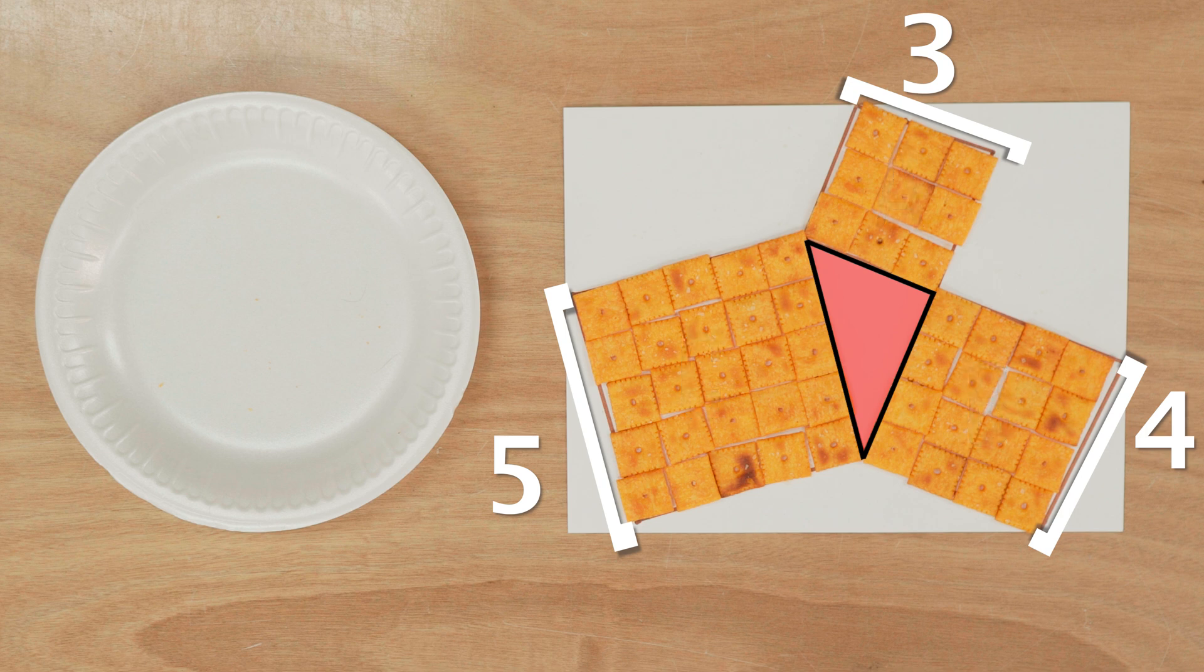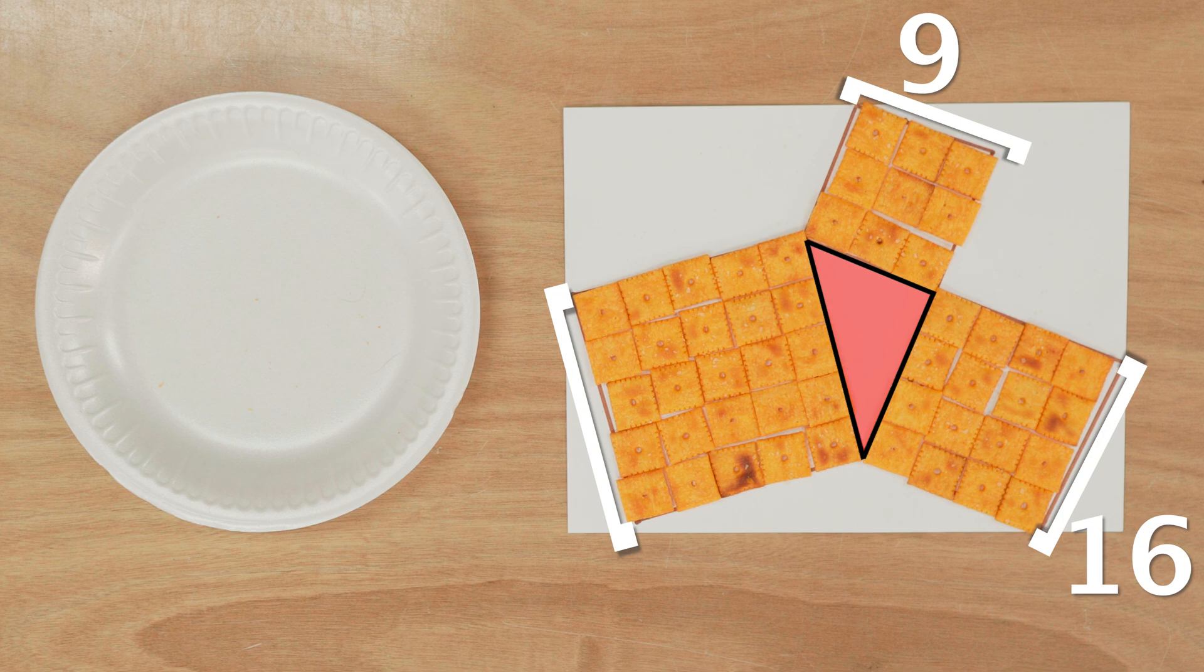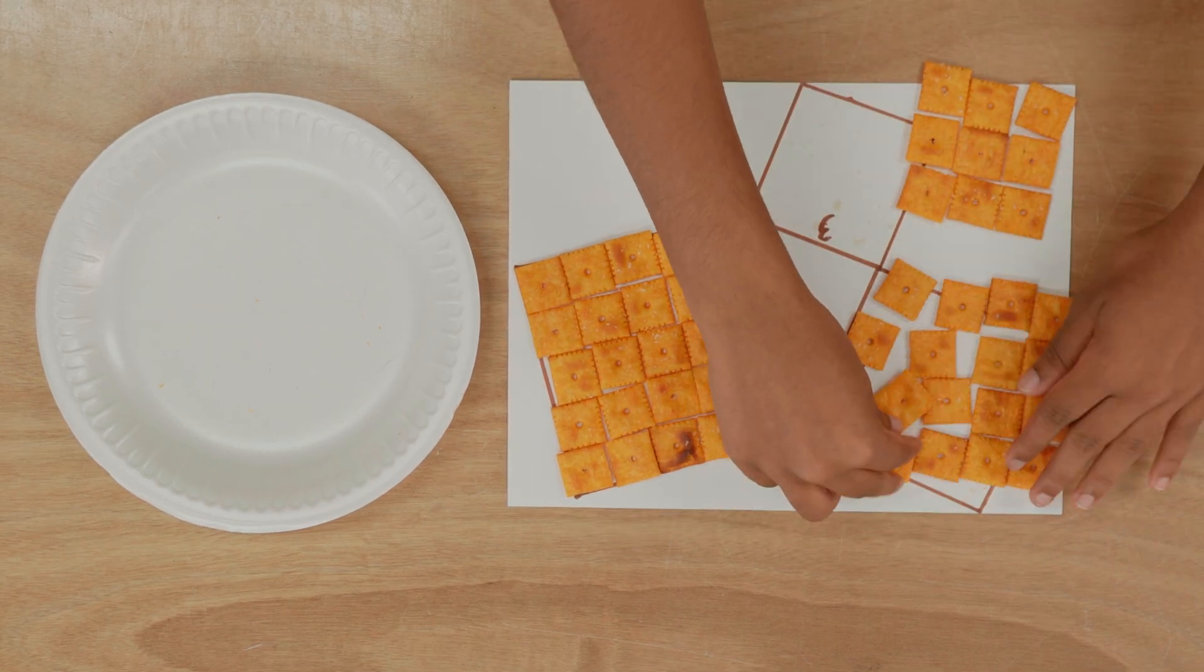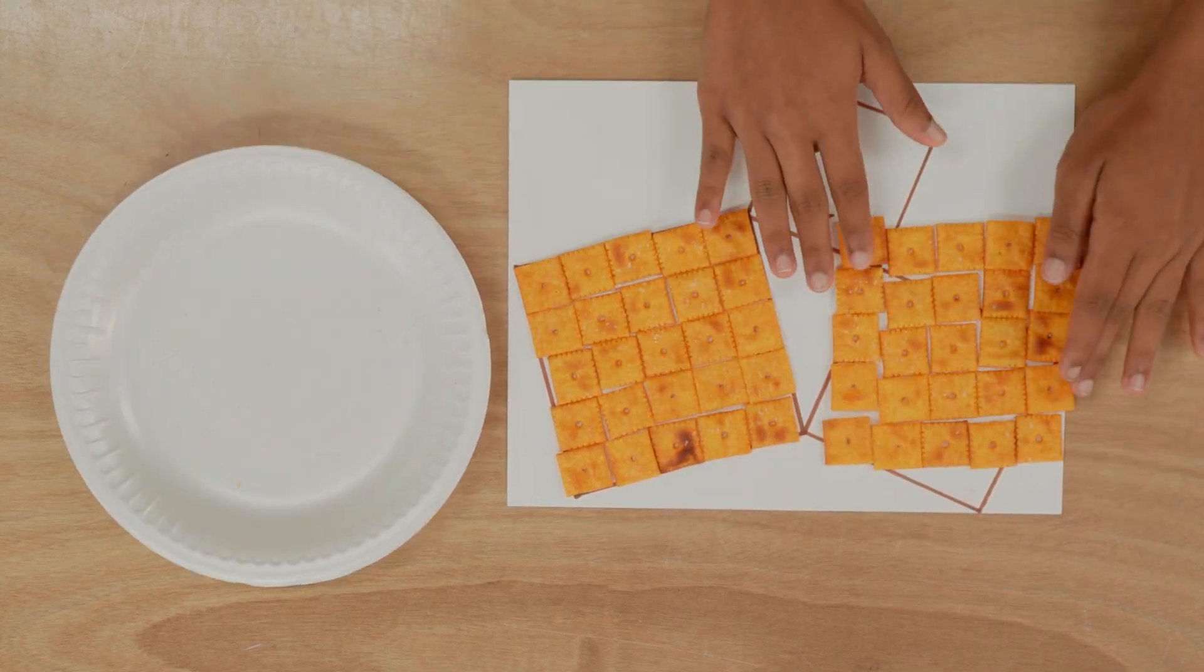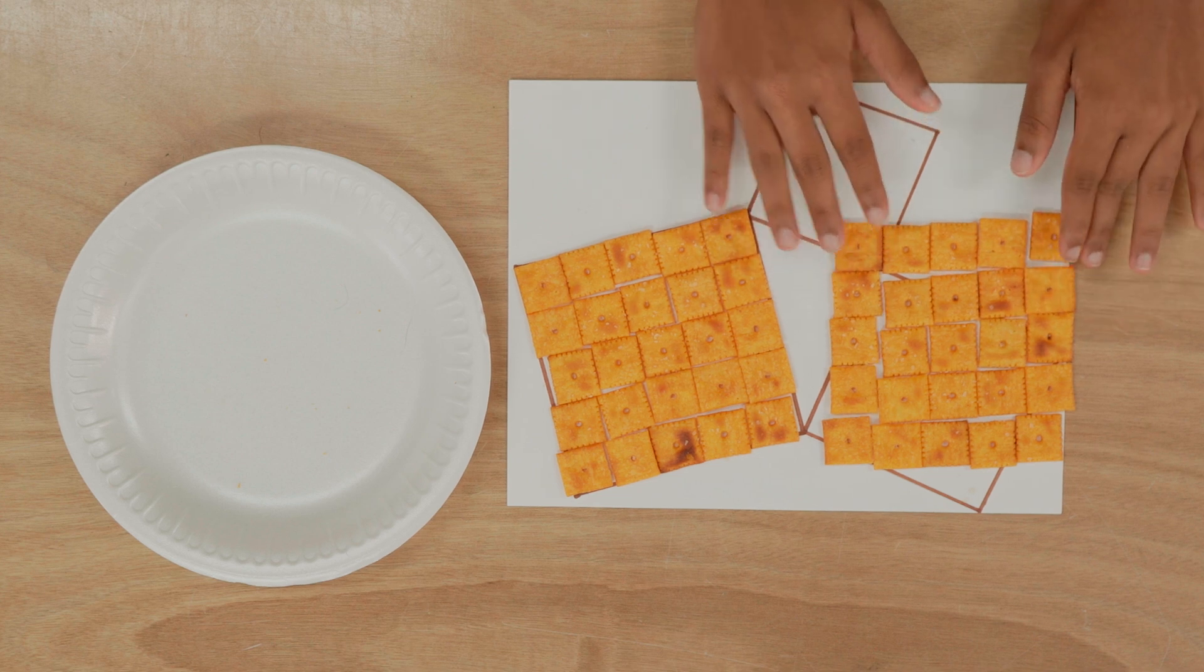If we solve for the area of all of the squares we created, we would have 9, 16, and 25. If we rearrange the Cheez-Its from the 3 and 4 squares, we can create a perfect 5 by 5 square of Cheez-Its.